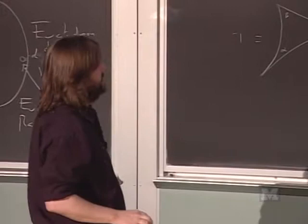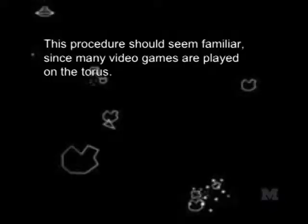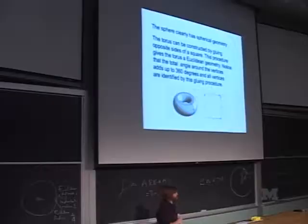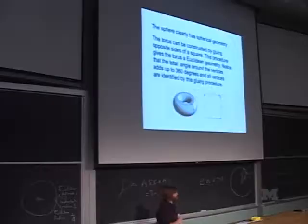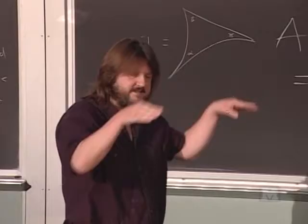If you actually try to do this gluing in Euclidean space, you'll have to bend and distort the geometry — this is a theorem of Hilbert. But if this is just our description of the space, we know how to live in it. If you're the right age, you played asteroids — and asteroids is played on a torus with a Euclidean structure. The asteroid goes off the top in one direction and comes back in the bottom going that way. At the vertex point it looks like four quadrants glued together — total angle 360 degrees.